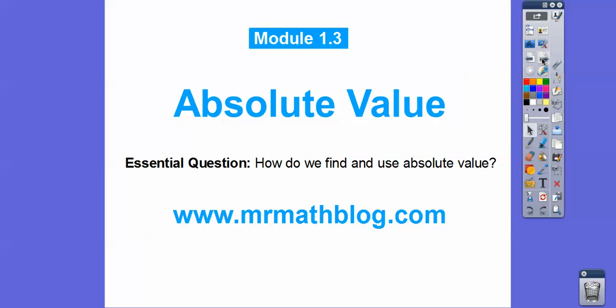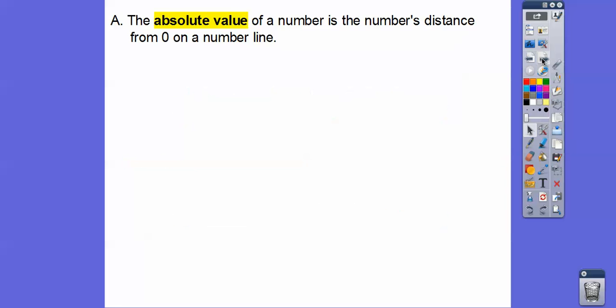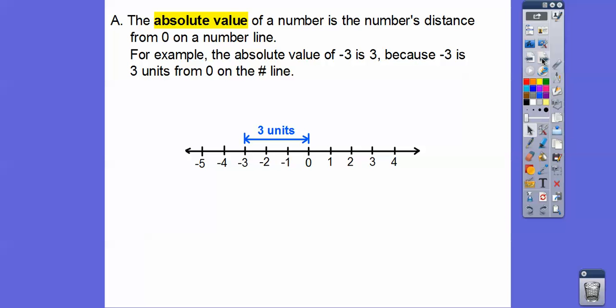So how do we find and use what's called absolute value? The absolute value of a number is the number's distance from zero on a number line. You can think of positive numbers and negative numbers, but it's the actual distance it is from zero on a number line.